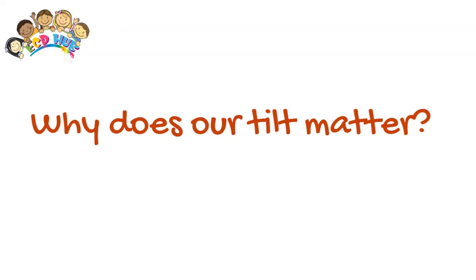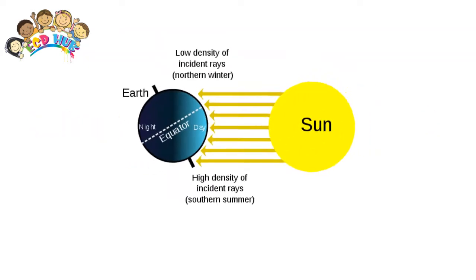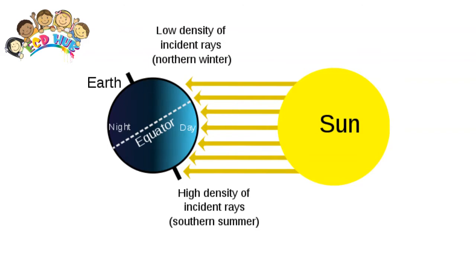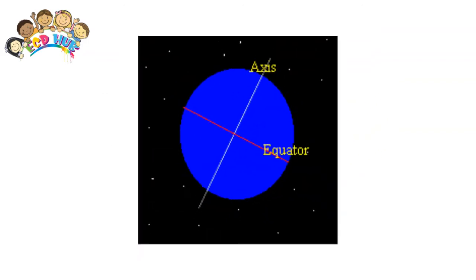Why does our tilt matter? The tilt has two major effects: the angle of the Sun to the Earth and length of the days.